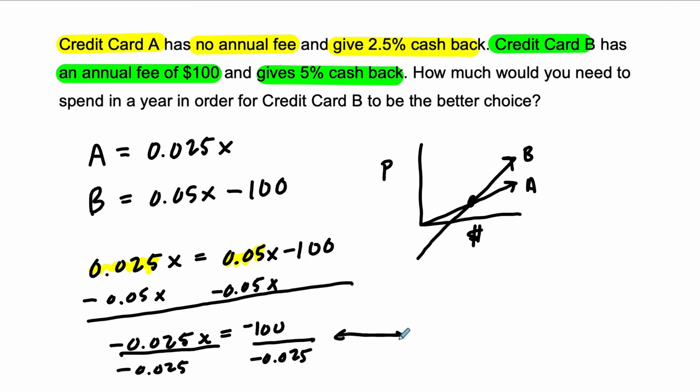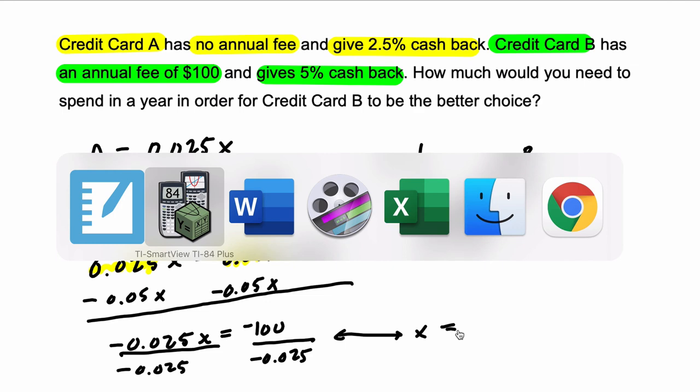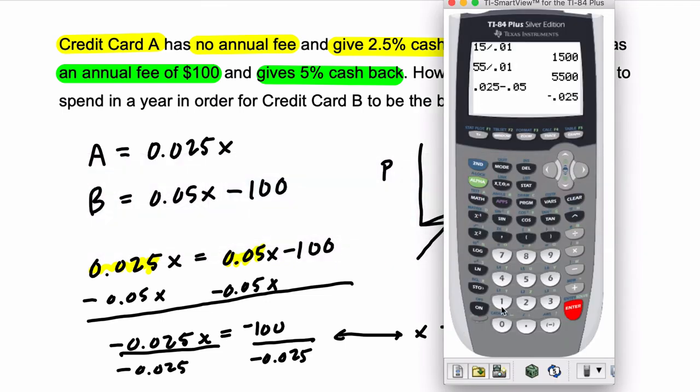And that means that x would be equal to, it's going to be a positive result, $100 divided by 0.025, $4,000.